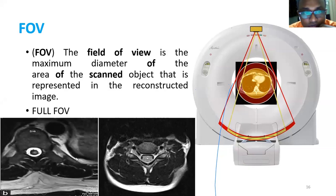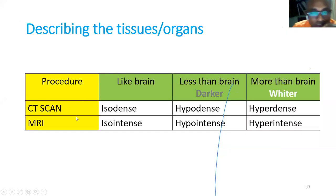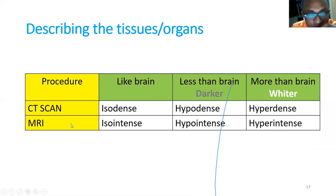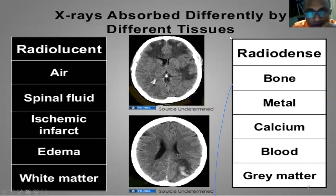Describing tissues and organs in CT scan: if density is like brain, it is isodense; less than brain is hypodense; more than brain is hyperdense. In MRI, it is called intensity: like brain is iso-intense, less than brain is hypo-intense, more than brain is hyper-intense. Radiolucent structures such as CSF, ischemic infarct, edema, and fat are hypodense or hypo-intense. Radiodense structures like bone, metal, calcium, and blood are hyperdense.